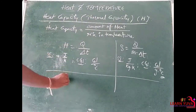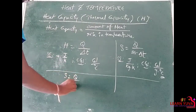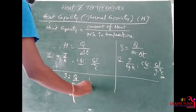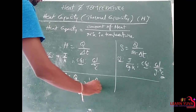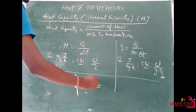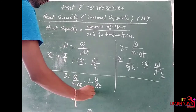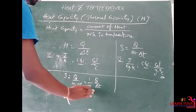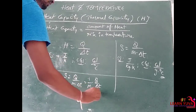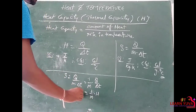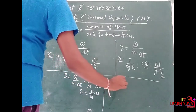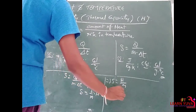S is equal to Q divided by m into delta T, which can be written as 1 by m into Q by delta T, and since H equals Q by delta T, this gives S equals H divided by M. Therefore, H equals M into S. This is the relation between heat capacity and specific heat capacity.